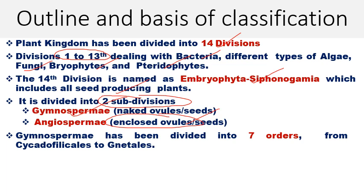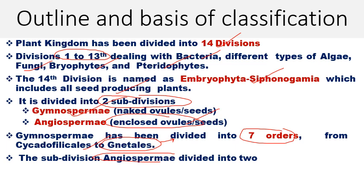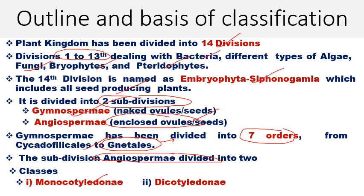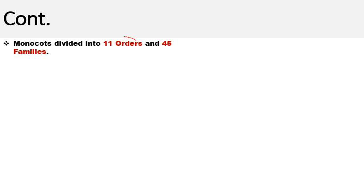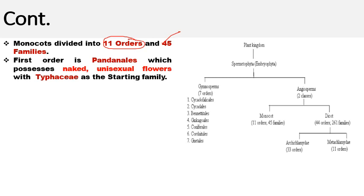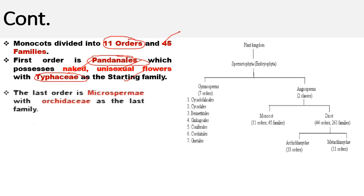Gymnospermae has been divided into seven orders, ranging from Cycadophyta to Gnetales, which is the most advanced order. The subdivision Angiospermae was divided into two classes: Monocotyledonii and Dicotyledonii. Monocotyledonii was considered primitive and Dicotyledonii advanced. Monocots were divided into eleven orders and forty-five families. The most primitive order was Pandanales, which includes naked unisexual flowers, with Typhaceae as the starting family.